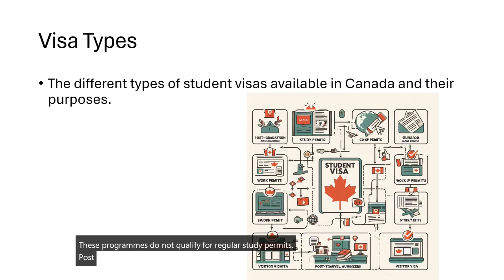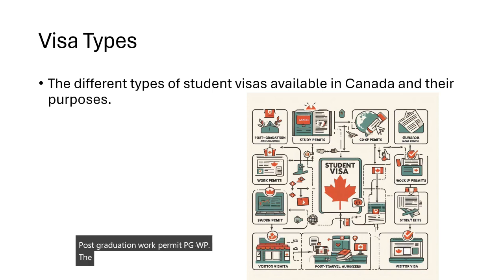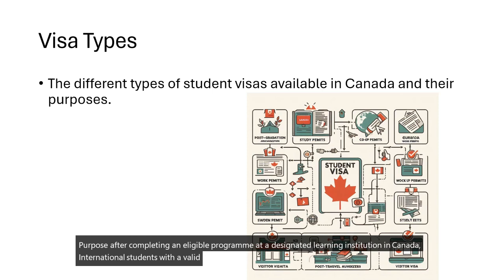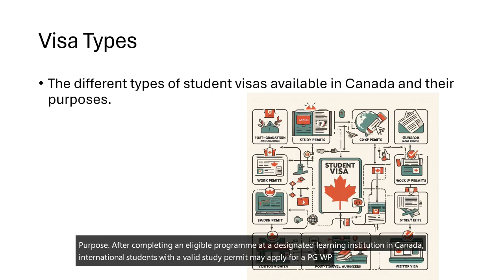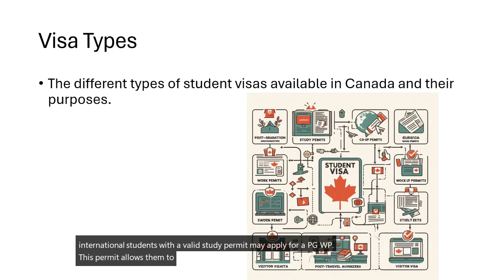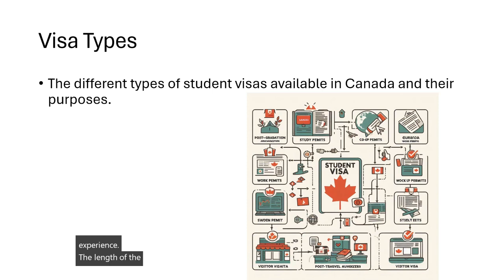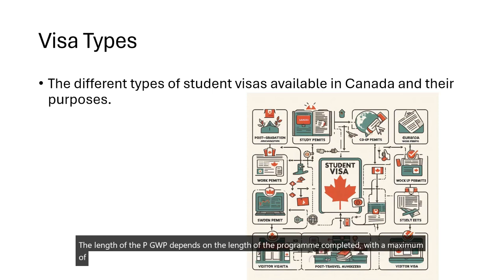Post-Graduation Work Permit (PGWP): This permit allows graduates to work in Canada for a specific duration to gain Canadian work experience. The length of the PGWP depends on the length of the program completed, with a maximum of three years.